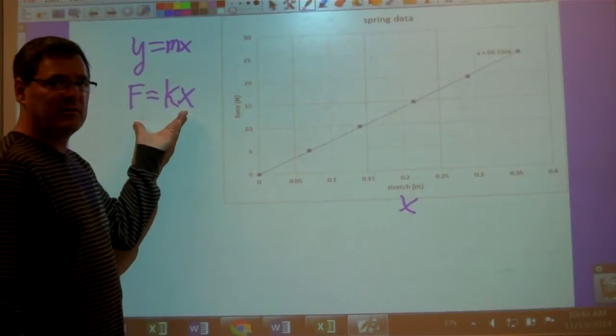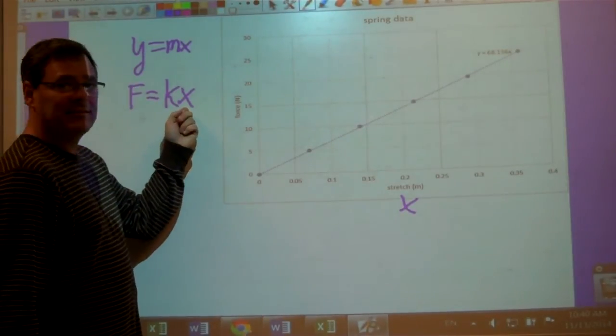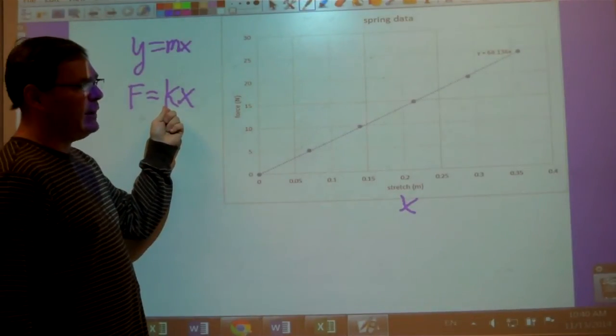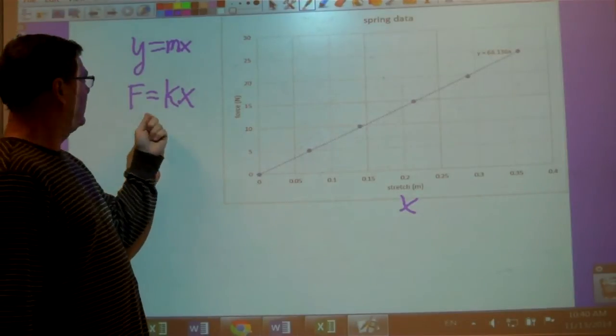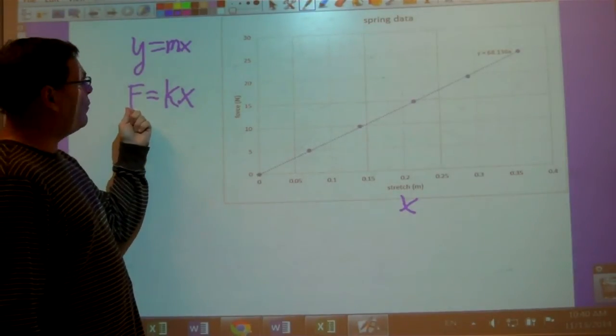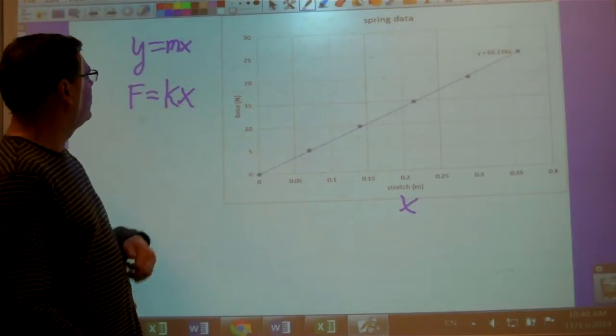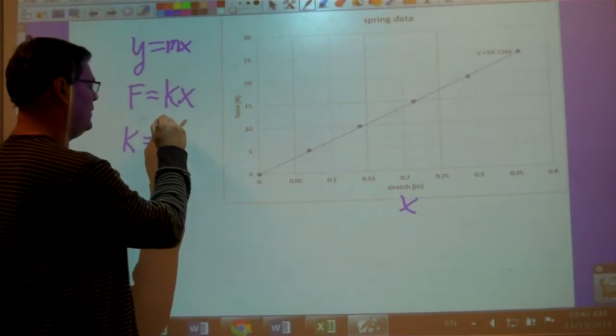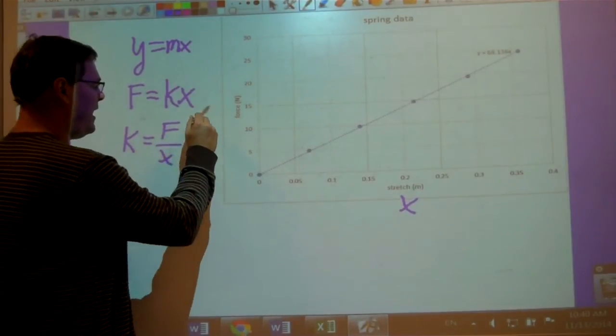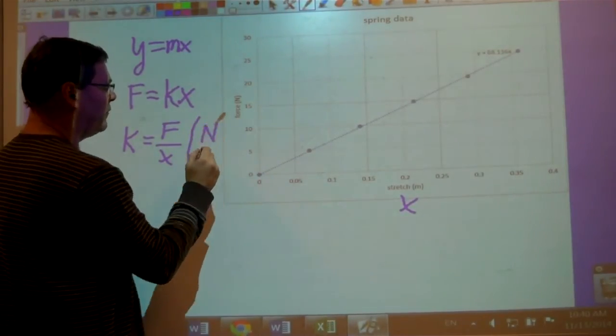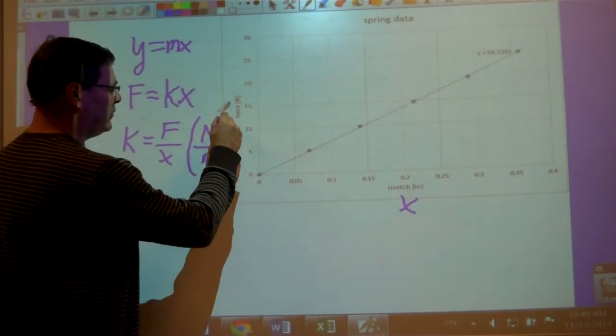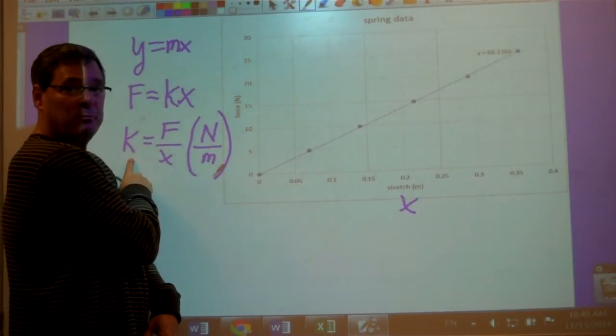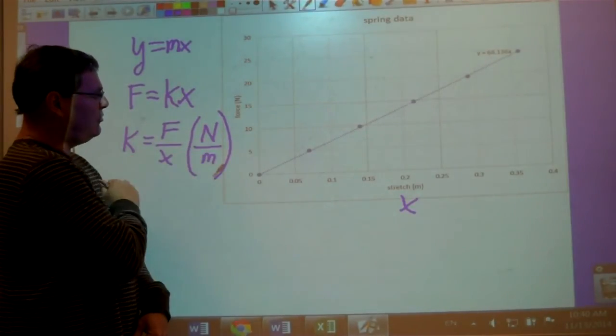And we come up with this equation, f equals kx, where x is the amount of stretch of the spring, k is the constant of proportionality between the two, and f is the force. Units of newtons for force, units of meters for stretch. Which if I solve the equation for k, I have units of newtons for force over meters for stretch. So my units for what is called the spring constant, is newtons per meter.